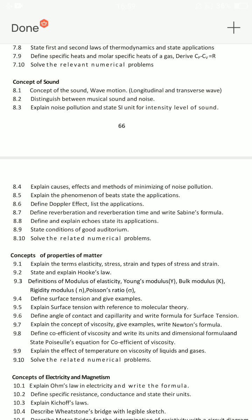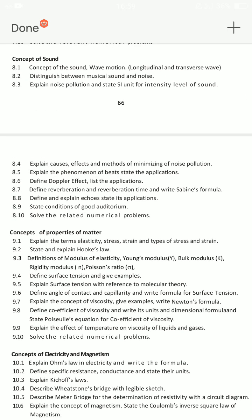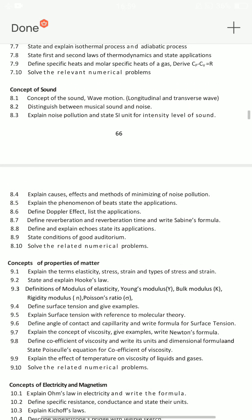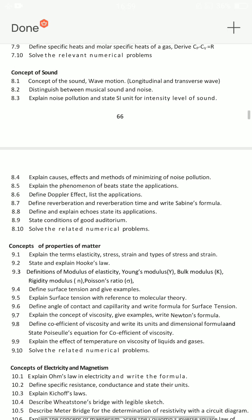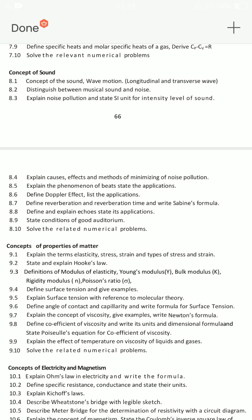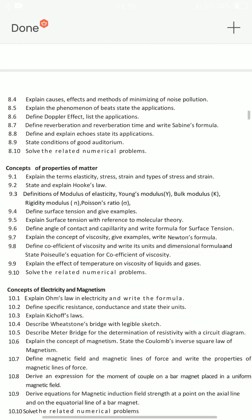Sound — 8.4: explain causes, effects, and methods of minimizing noise pollution — 17th important essay question. After that: Doppler effect, and then reverberation and reverberation time — choose from. Shorts also cover chances. State conditions of good auditorium — shorts also cover chances.